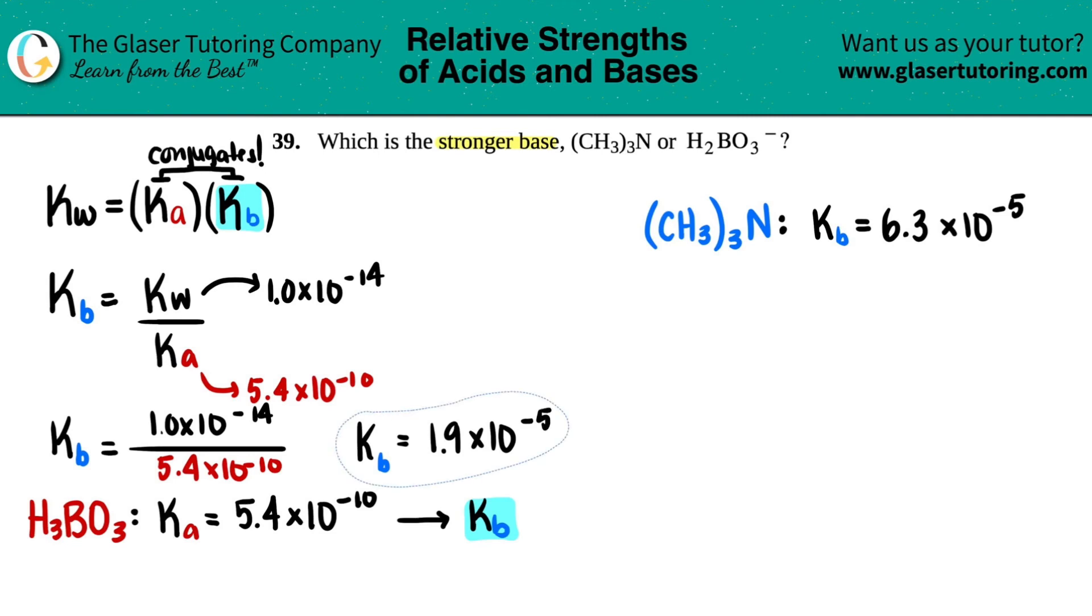I'm just going to copy that. This number goes over here, and this is now the conjugate base Kb. So this will be H2BO3-.